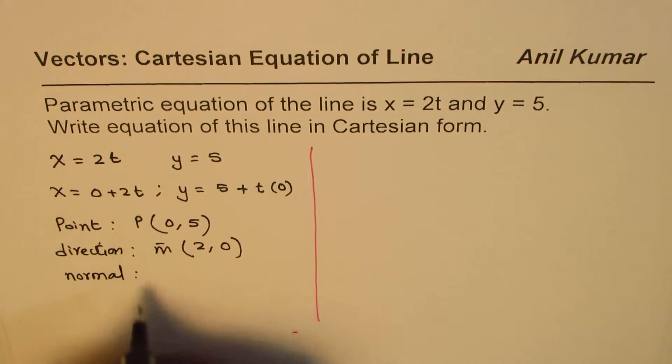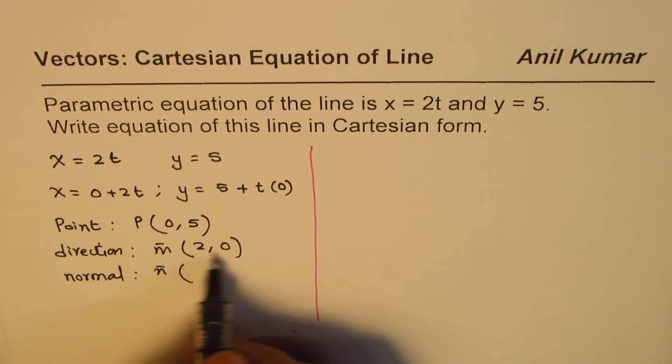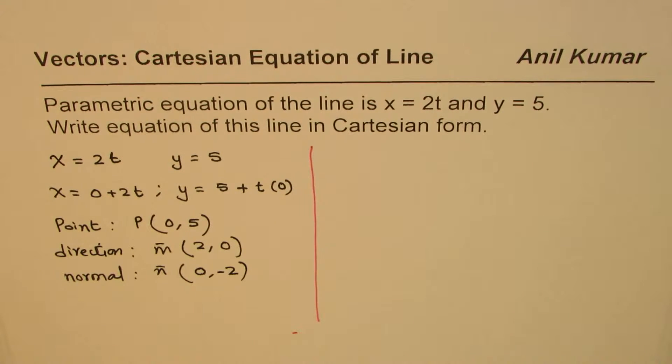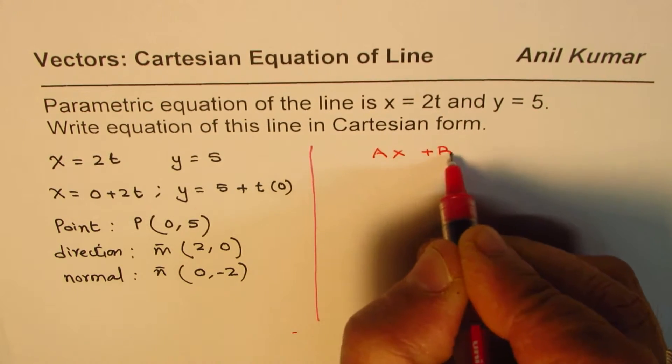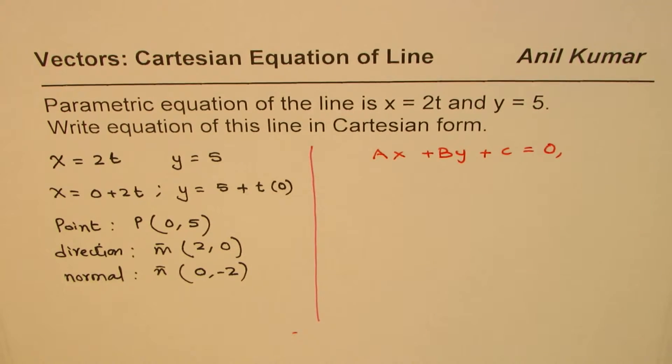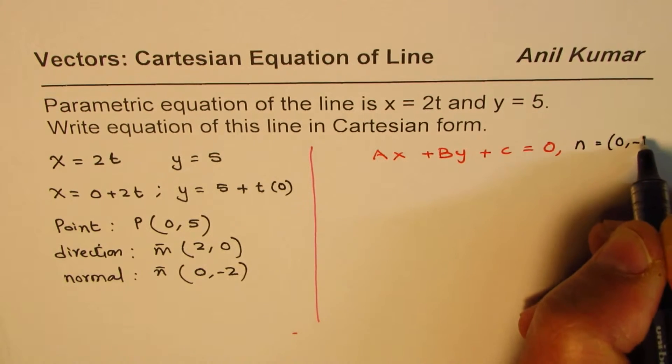So the normal will be—we have to reverse this—so it becomes 0 and 2, and change the sign. So we get (0, minus 2). We know a point, so at this stage we can use the general form of Cartesian equation which is ax plus by plus c equals 0, and the normal is equal to (0, minus 2).